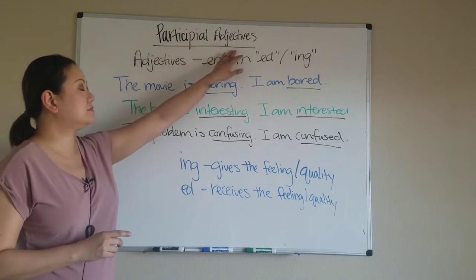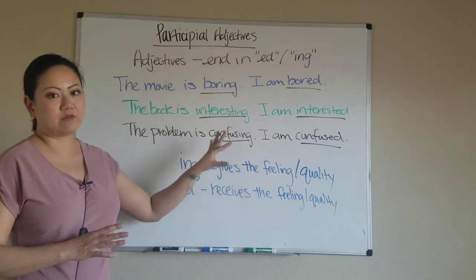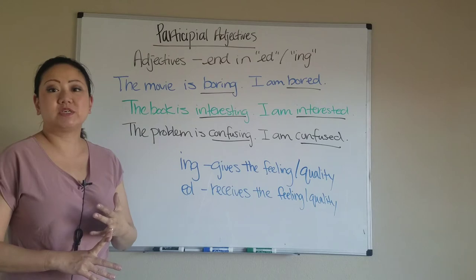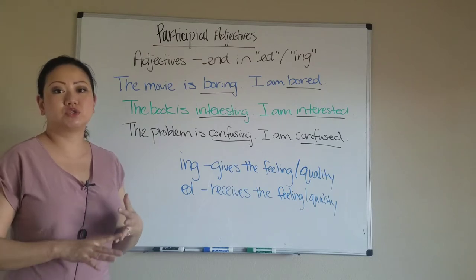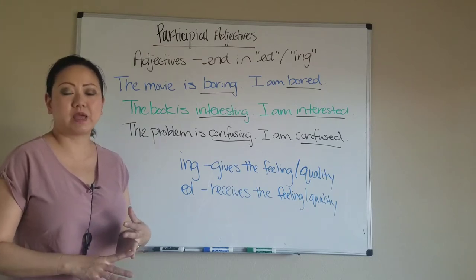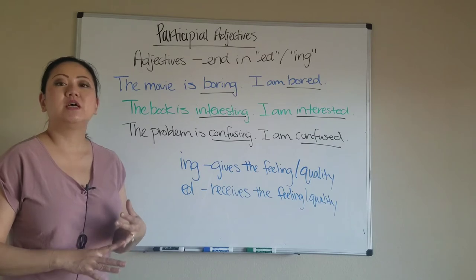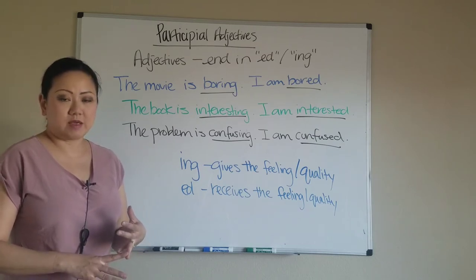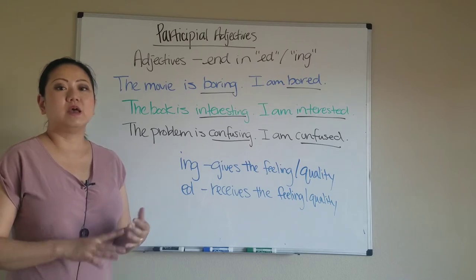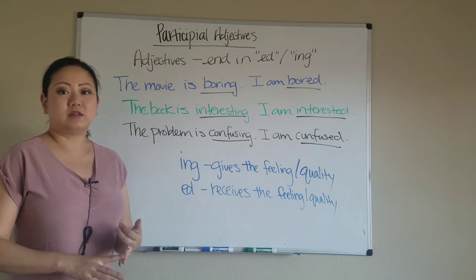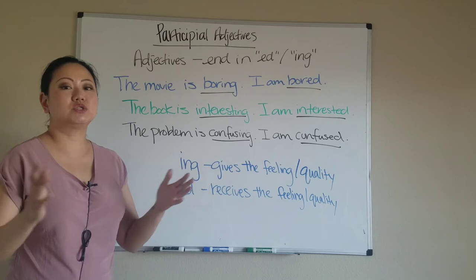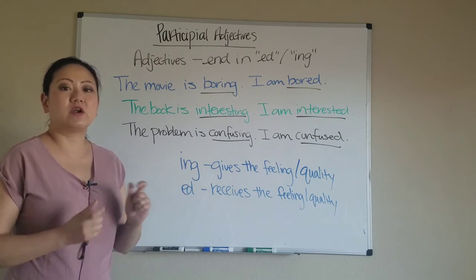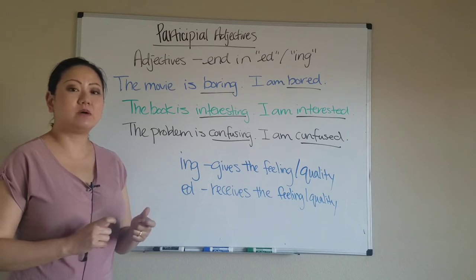Participial adjectives is the name of this type of grammar. Adjectives are words that describe nouns. Usually we think about adjectives as words like beautiful, ugly, big, or small — very unique words that describe nouns.